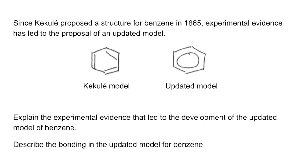So we've got this question here. Since Kekulé proposed a structure for benzene in 1865, experimental evidence has led to the proposal of an updated model. So you've got the Kekulé model on the left with its alternating double and single carbon-carbon bonds and then on the right hand side we've got the updated model.